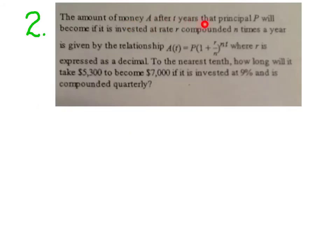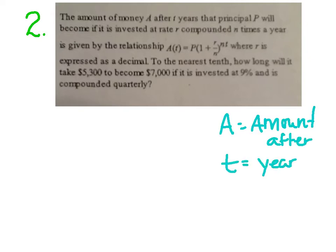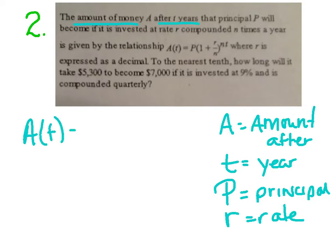All right. The amount of money, A, after T years. So, A stands for the amounts after, T stands for years. So, again, we're just reading it. First couple words here tell us that. That the principal P will become if invested at rate R, compounded 10 times a year, is given in this relationship. So, let's go ahead and write that equation down. A of T equals P times 1 plus R over N to the N times T.